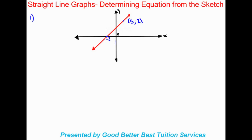Looking at this first example, we can see this line heading in this direction, which tells us we are working with a positive gradient. We can note that the gradient is positive so that we can confirm our equation is correct once we've worked it out.